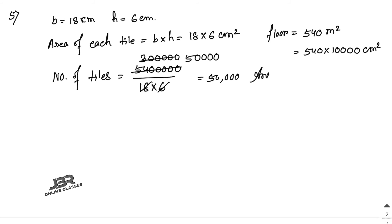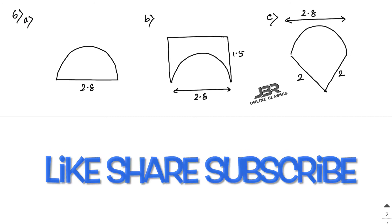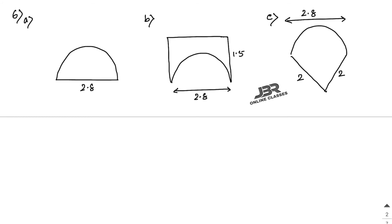Number 6 is the last sum for this video. An ant is moving around a few food pieces of different shapes scattered on the floor. There are three food pieces A, B and C. For which food piece would the ant have to take the longer round? You have to find the perimeter of each shape. The first one is a semicircle with diameter 2.8, so the radius equals 1.4. The perimeter formula is pi·r + 2r.